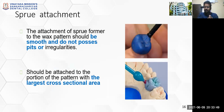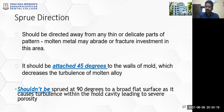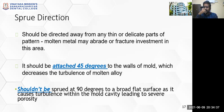The sprue attachment is generally done with wax. The attachment of sprue former to the wax pattern should be smooth and should not have any pits or irregularities — it should be a smooth transition from your wax pattern to your sprue and reservoir. It should be attached to the portion of the pattern with the largest cross-sectional area. The sprue direction should be directed away from any thin or delicate part and away from the margins, as thin areas may chip off or break once you retrieve your casting.